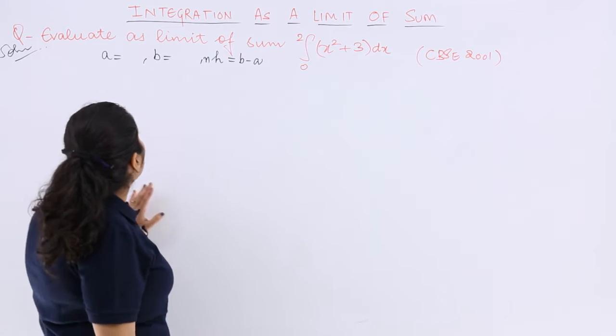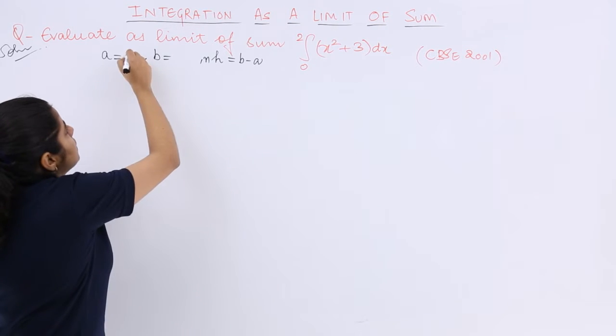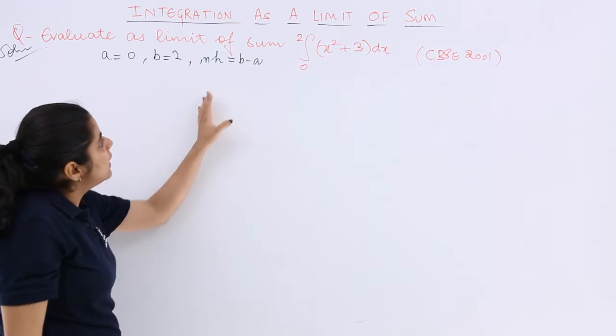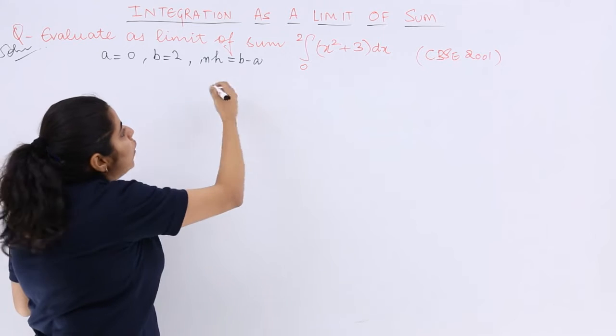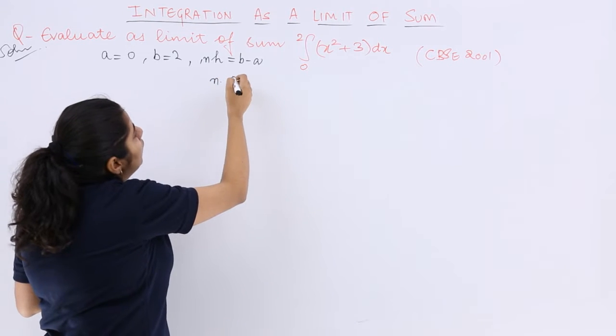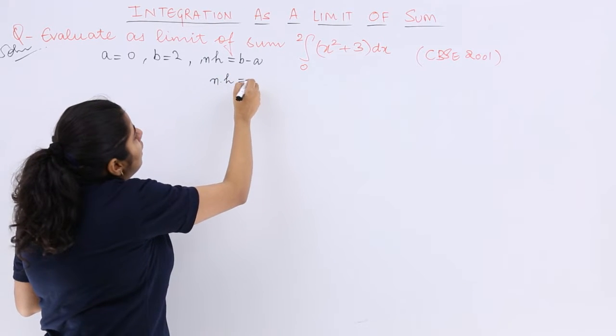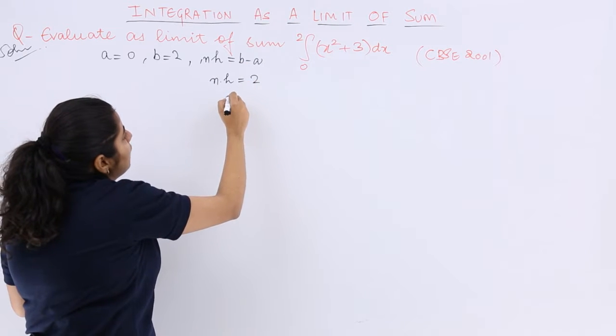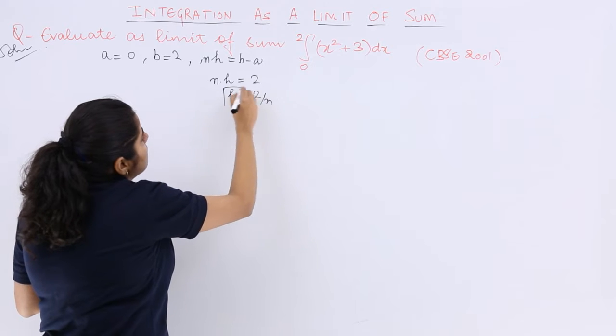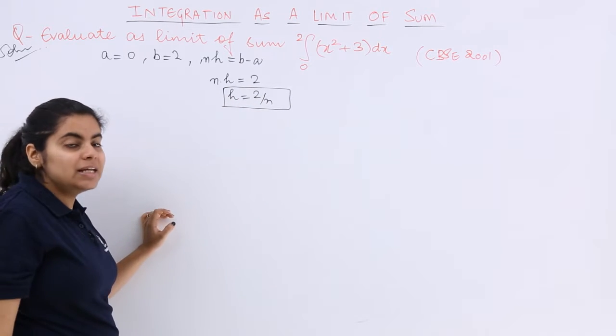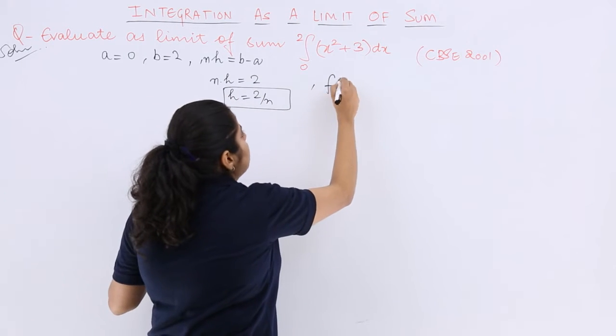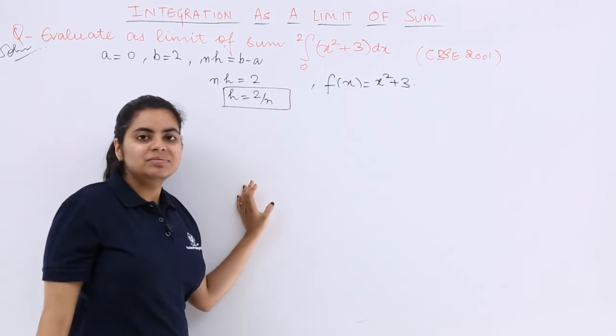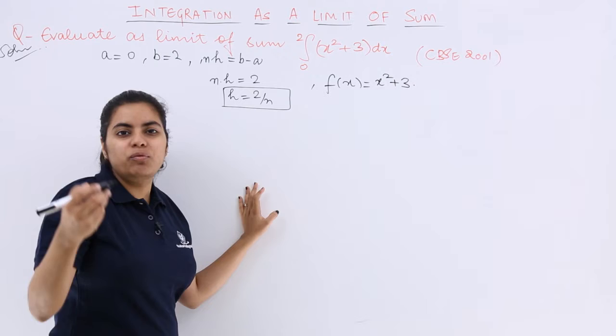A is the lower limit which is 0. B is the upper limit which is 2. NH is B minus A. I don't know N, I don't know H, but B minus A I know is 2 minus 0 which is 2. So I can write that H is equal to 2 upon N. What is my FX? FX is the function x square plus 3.